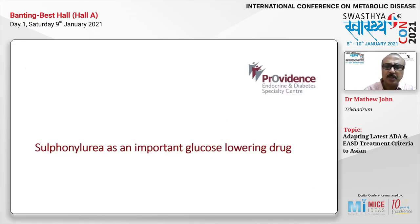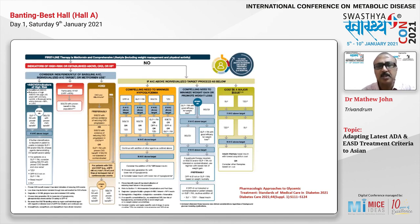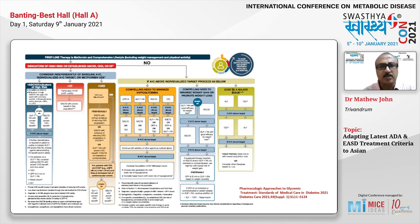The guideline focuses on risk factor assessment: whether the patient fits into a category of atherosclerotic vascular disease, heart failure, or CKD — or does not fit into these three categories. If your patient does not fit into these categories, then you look at three considerations: cost as a major issue, the need to minimize weight gain or promote weight loss, or the need to minimize hypoglycemia.